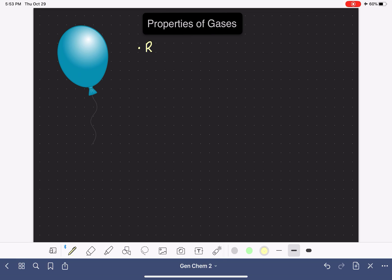First of all, gas molecules have random motion, and also their motion is very fast. So we're going to say that they have random and fast motion.